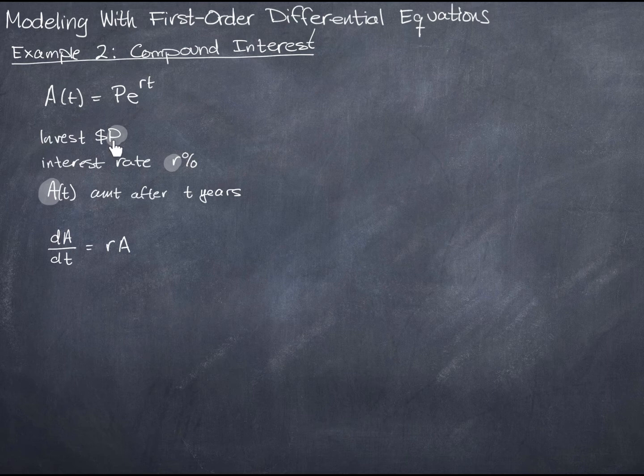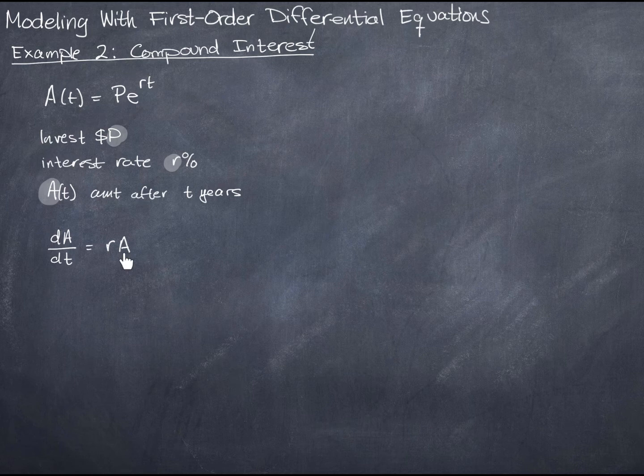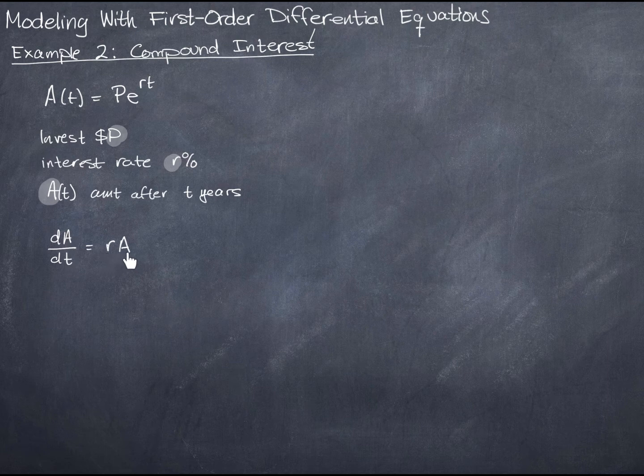So if you invest, say, $100 and you have a 5% interest rate, then at the end of the year you'll have $105. That could be $105 then, and you take the interest rate and apply it again. The change in the amount over time is the rate times the amount in the account at that particular moment.